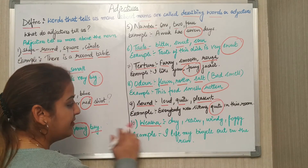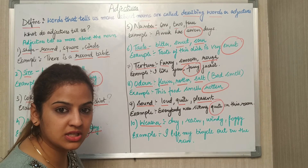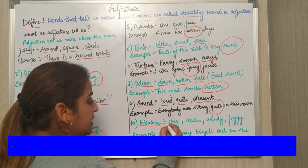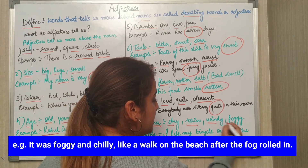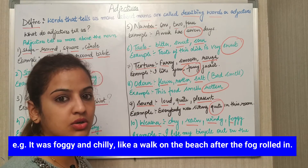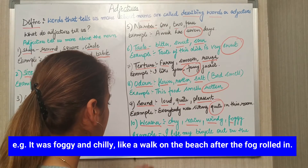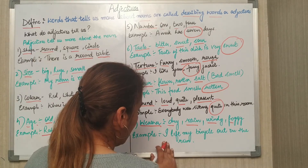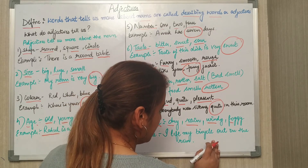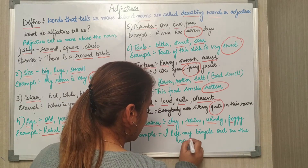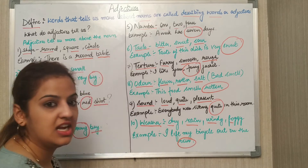Next is weather. Weather can be anything — dry, rainy, windy, foggy, summer, autumn — anything. Example: I left my bicycle out in the rain. Here 'rain' is an adjective.